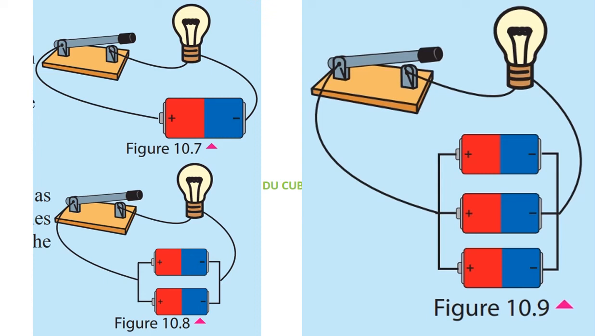First, connect one dry cell with a bulb and switch as shown in the figure. Close the switch and observe the brightness of the bulb. Then connect other cells to the bulb and switch as shown in the second figure. Close the switches in each circuit and observe the brightness of the bulbs.